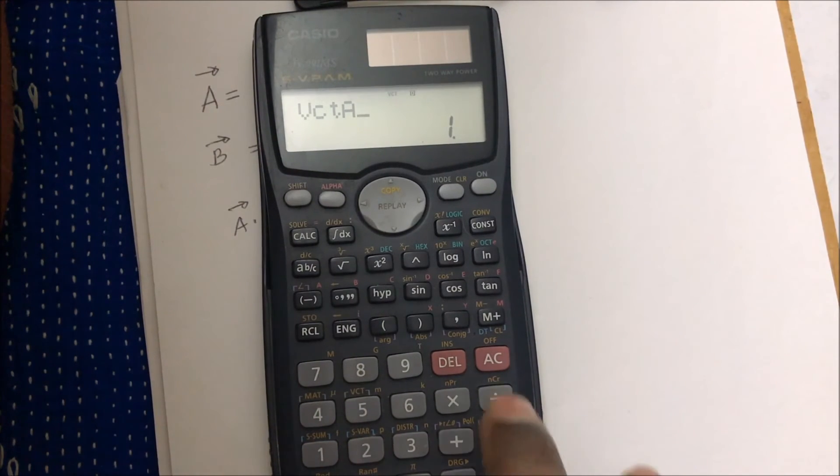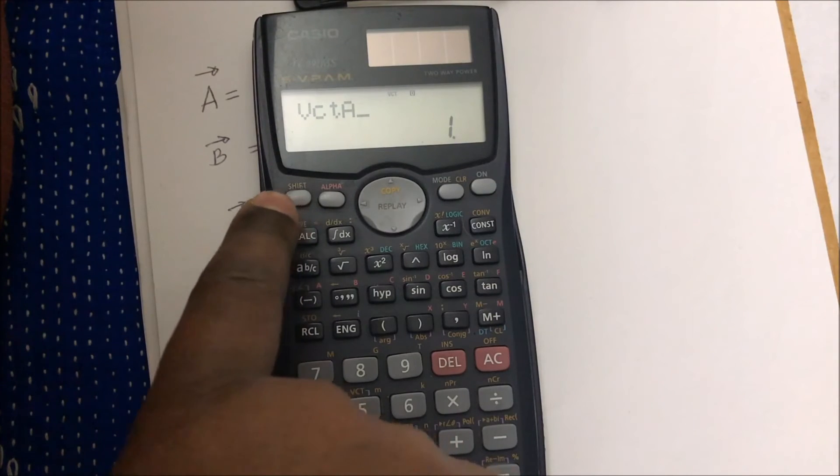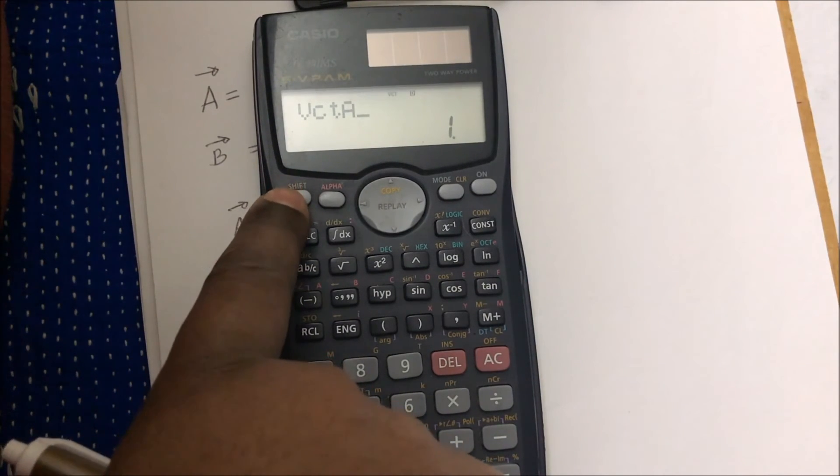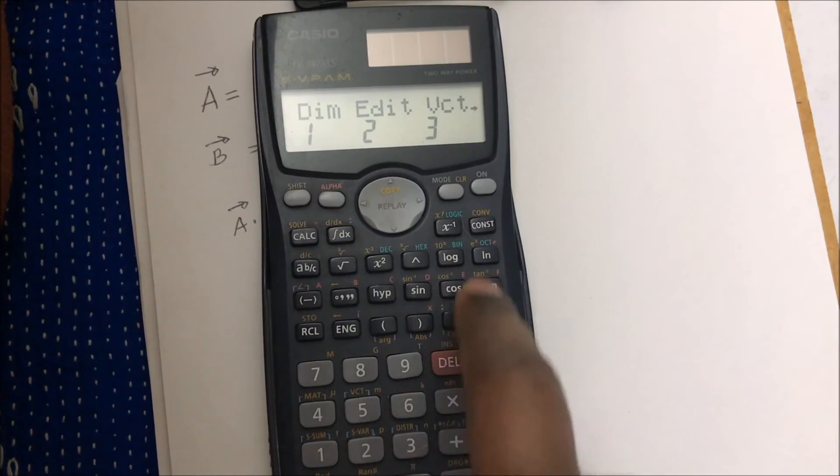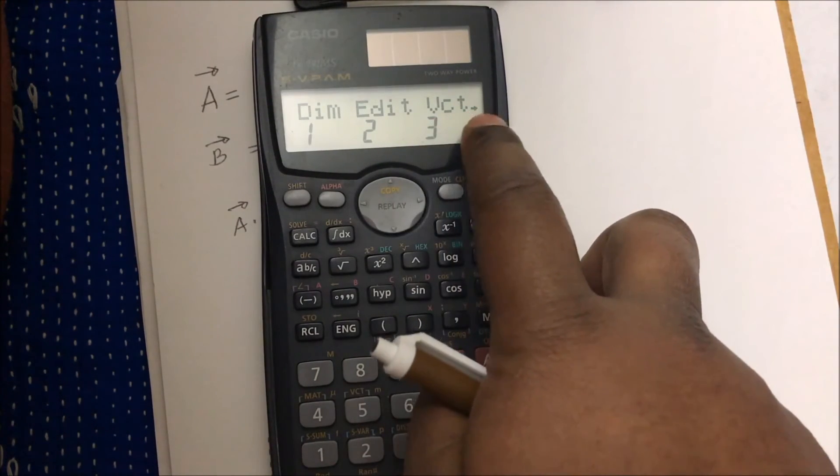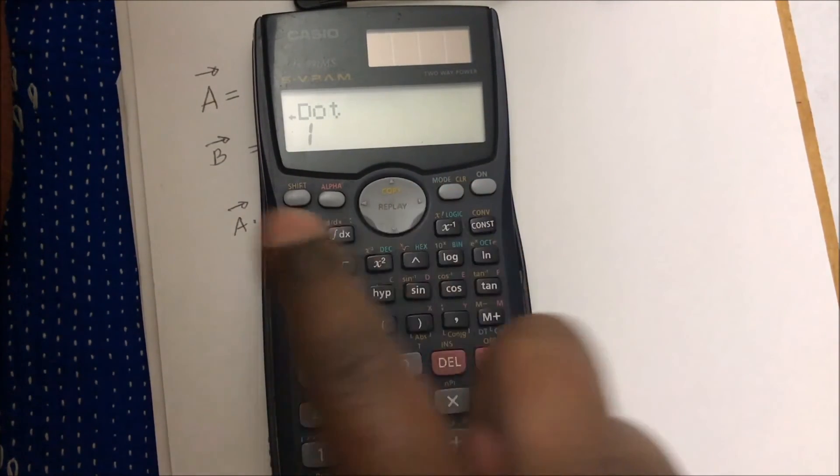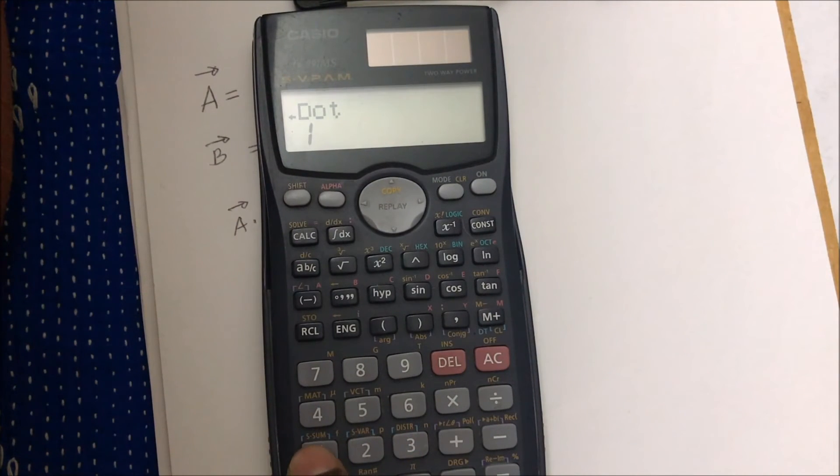So we have a vector. Now dot is a little hard to put. To put the dot, press the shift button again and vector. You see here in the corner you have an arrow - here is your dot. So to press the dot, you have to press one. Dot. So vector A dot.